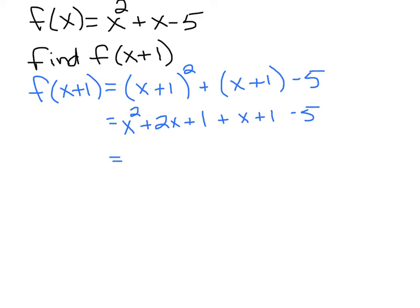All the x squareds go together. All the x's go together. And all the constants go together. That's all we can do. So, f of x plus 1 is equal to x squared plus 3x minus 3.